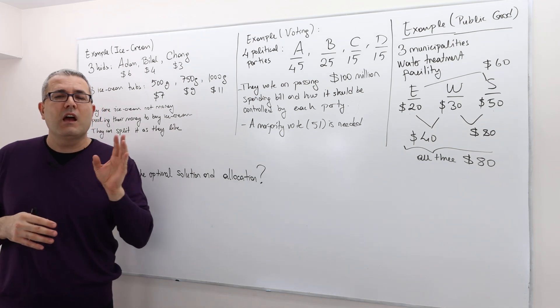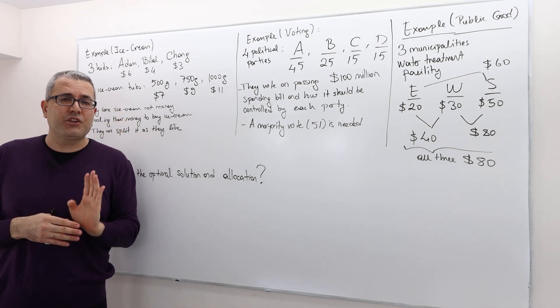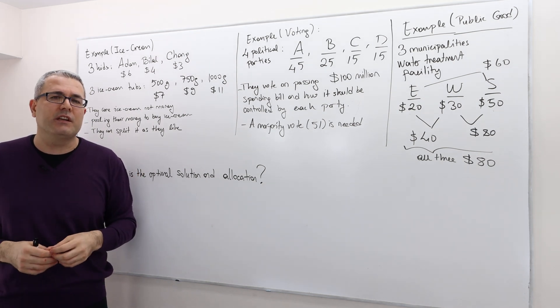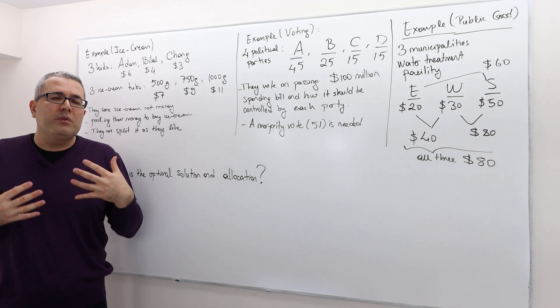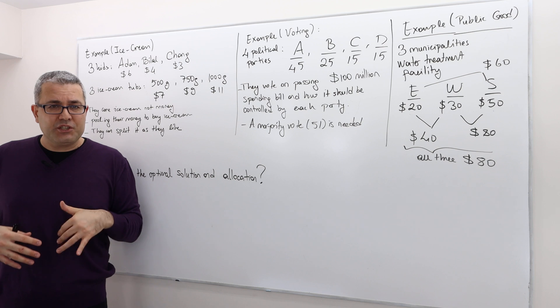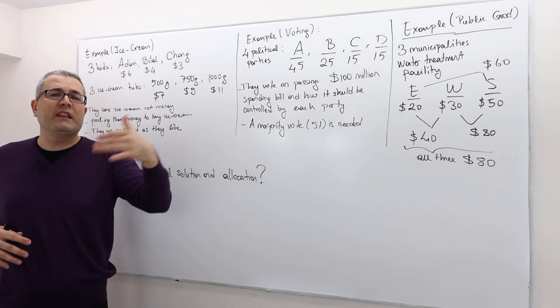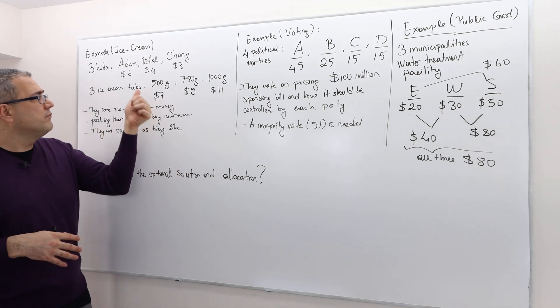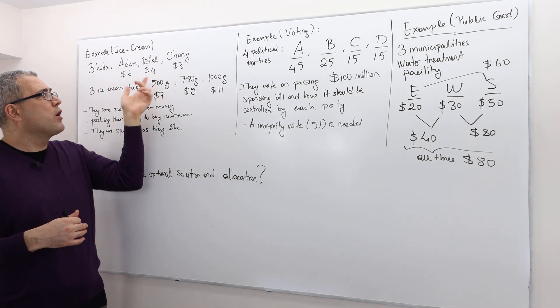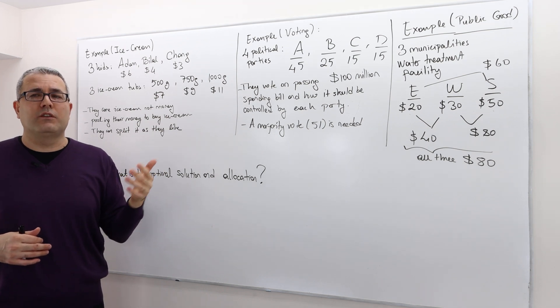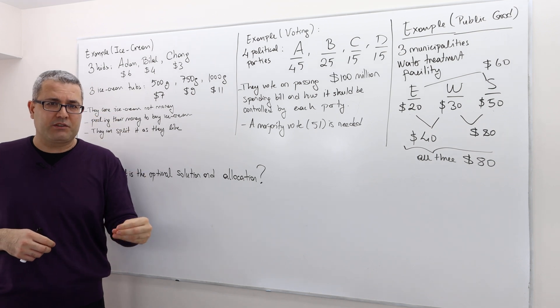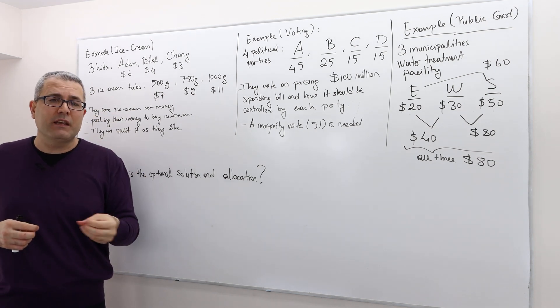And the important thing is that one player's action - whatever it is - one player's well-being does not only depend on his actions, it also depends on what the other guys are going to do, right? If Adam wants ice cream, he needs to convince at least one of the other guys to join him and pool their resources together and then buy ice cream. And then he should convince him about the way of division - like 50-50, or Adam is going to get the biggest portion.